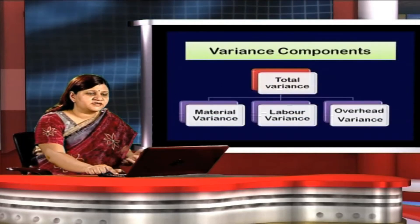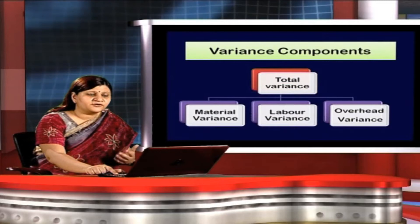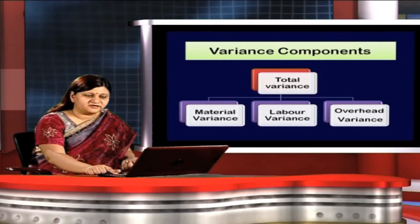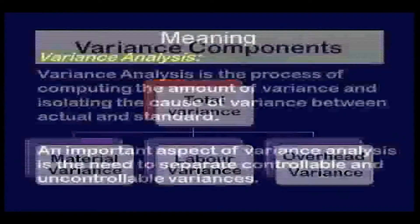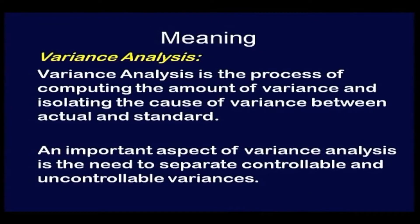A variance is said to be favorable when it increases the profit, and unfavorable when it decreases the profit. Under variance analysis, this detailed analysis of all factors associated with cost and revenue in relation to price and quantity are considered. The various components of total variance are material variance, labor variance, and overhead variance.